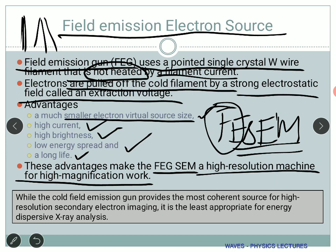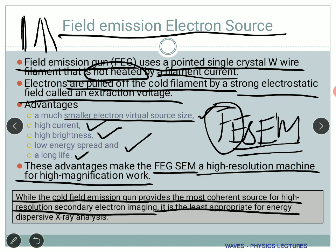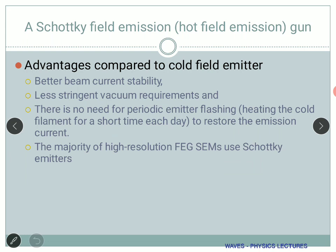Even in field emission electron sources there are two types. One is called the cold field emission gun, kept at room temperature and provided with an electric field — it provides the most coherent source for high-resolution secondary electron imaging, but is least appropriate for energy dispersive X-ray analysis (EDS). For EDS, we use a hot field emission, specifically named the Schottky field emission gun, which combines the field with a heated cathode — temperature is kept high for the cathode while the electric field is also applied.